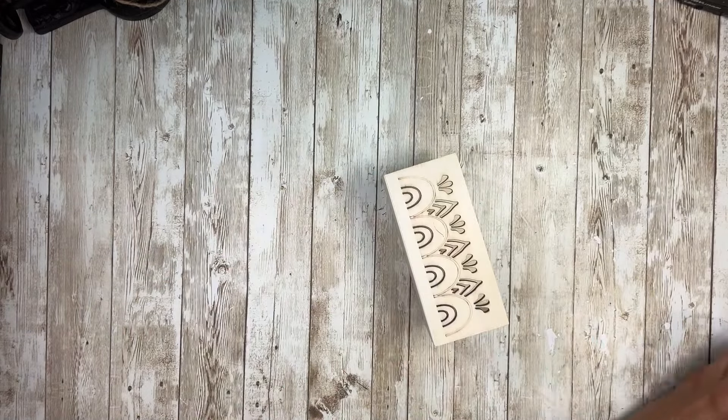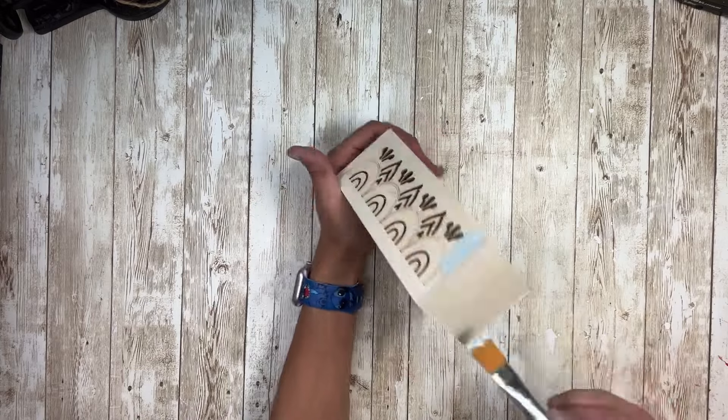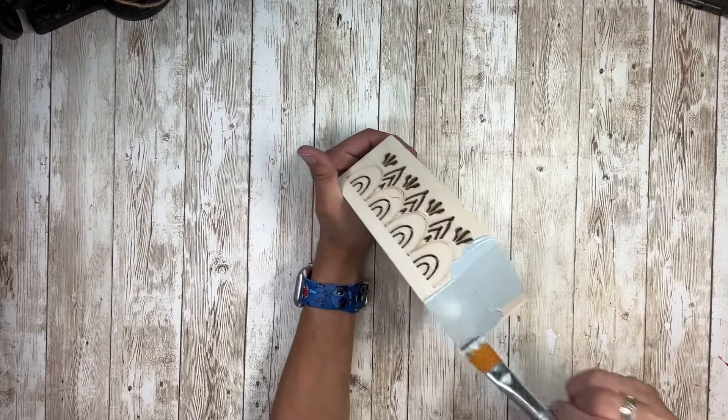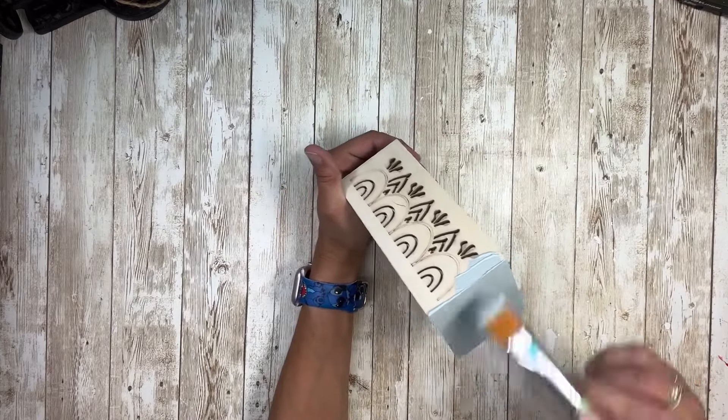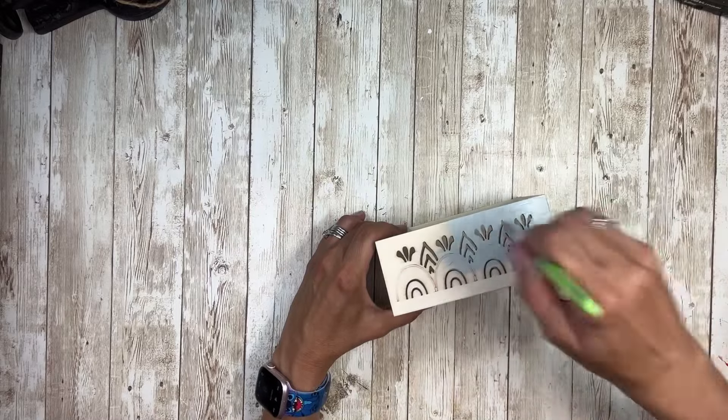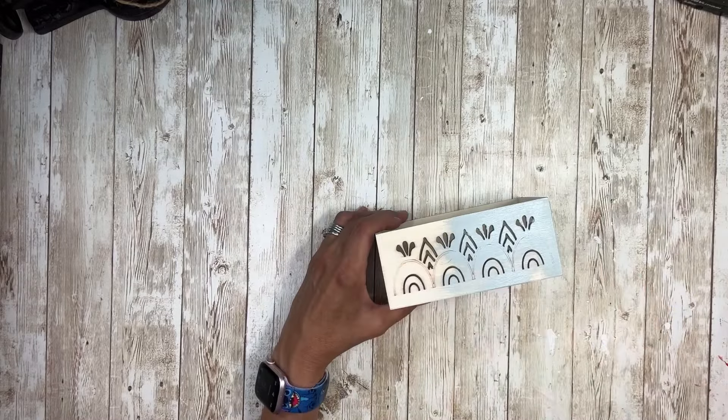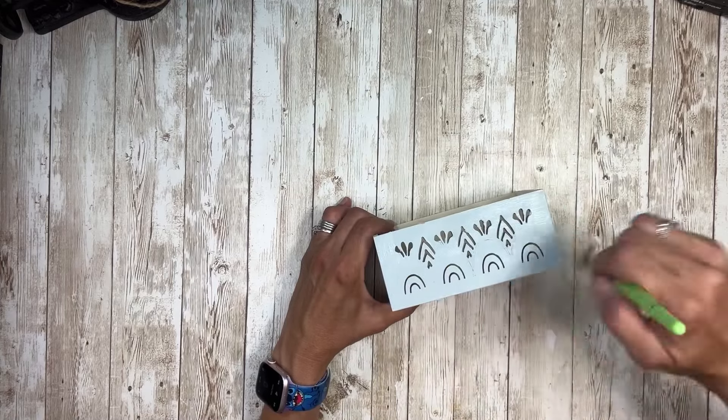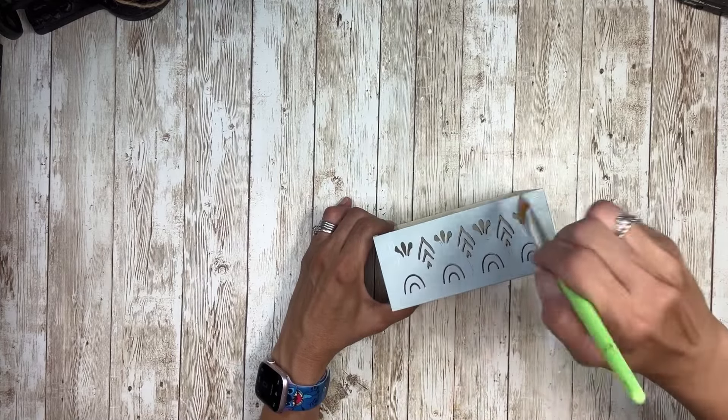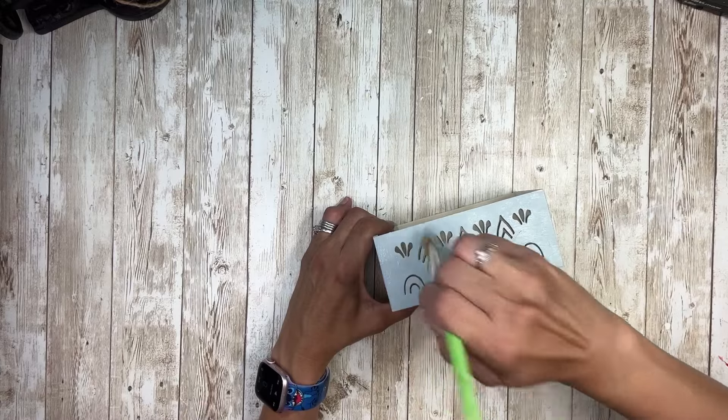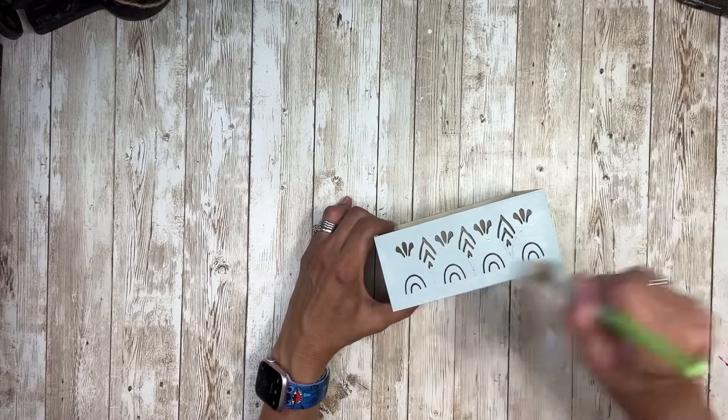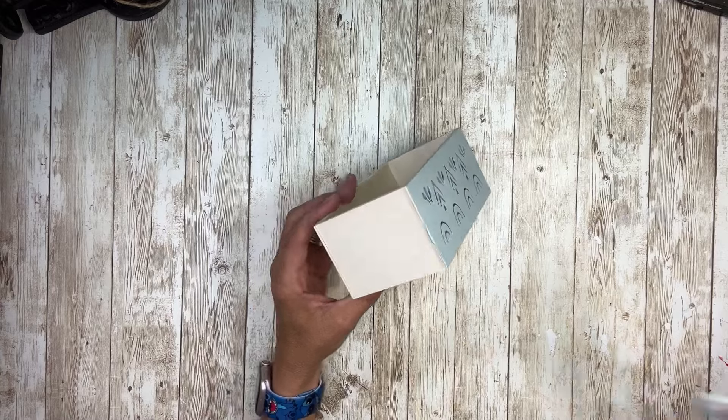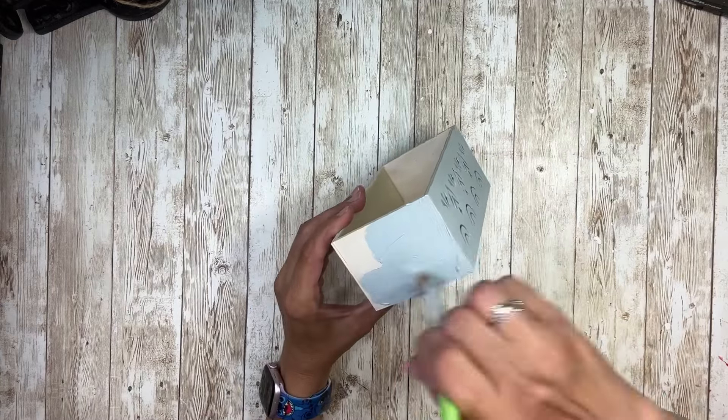I'm going to take this chalk paint in the color Primitive and give this whole box a coat of that. So I did all around the whole box and then I did on the inside as well. I did everything but the inside bottom. And I only needed one coat of this. It covered really well. And I love this color.